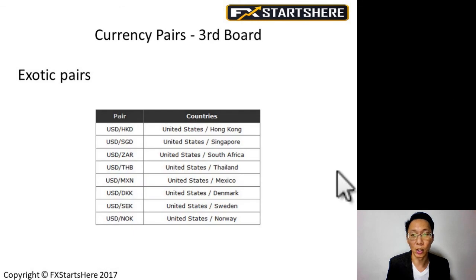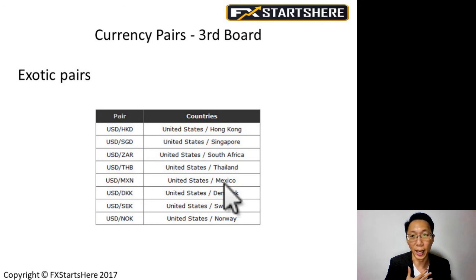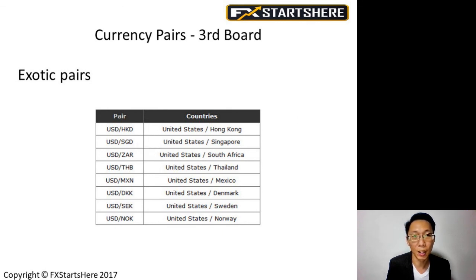Next, we have the exotic pairs. Not many people trade exotic pairs, especially retail traders, as the spread is quite big and there is lesser liquidity. Personally, I do not trade exotic pairs either. Some examples are USD/HKD — U.S. dollar against Hong Kong dollar — and USD/SGD — U.S. dollar against Singapore dollar.